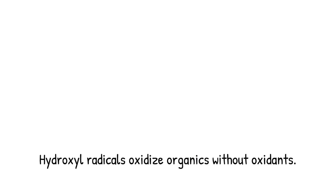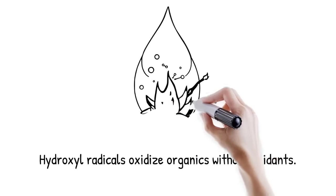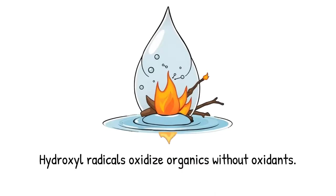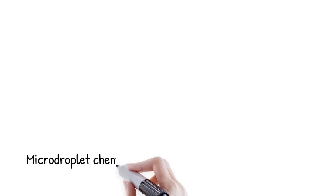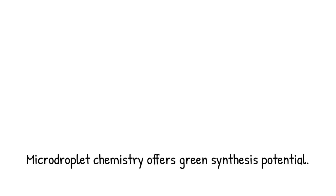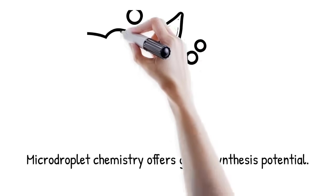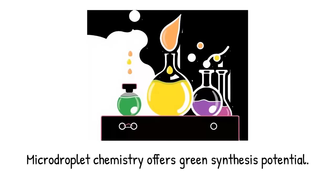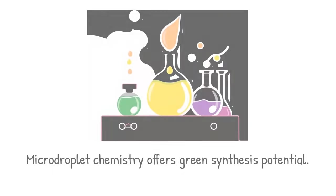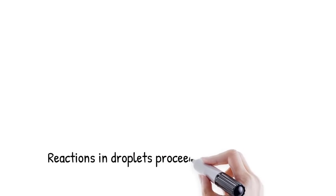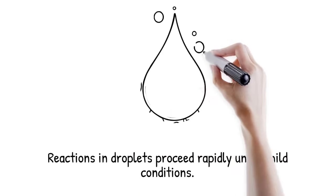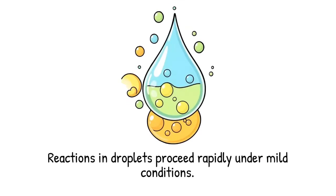The acceleration and spontaneity of micro-droplet chemistry offer immense potential for green synthesis. Many traditional reactions require harsh conditions, strong oxidants, or long times in bulk solution. In droplets, the same reactions may proceed rapidly under mild conditions without added reagents. This drastically reduces energy and chemical waste. Micro-droplet methods therefore align with sustainable chemistry goals. They transform inefficiency into efficiency simply by exploiting interfacial physics.